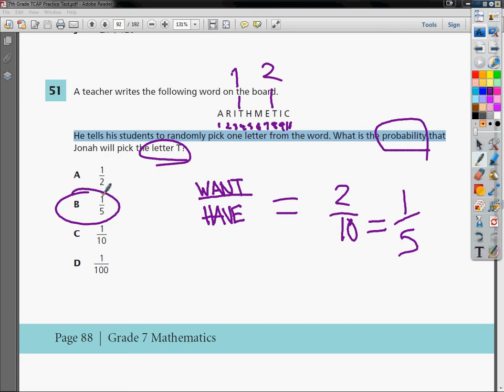So you see probability, you're probably going to make a fraction. Put the amount you have on the bottom, and the number of items that meet the criteria that you want on top, and you're ready to roll.